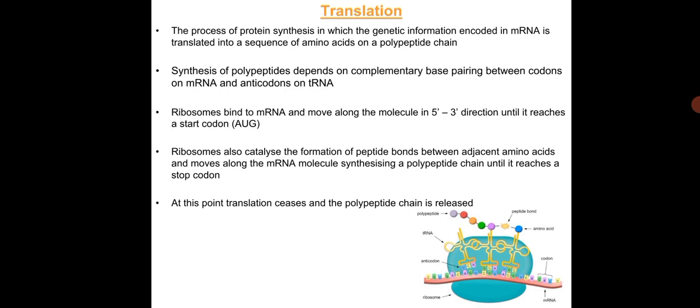Translation is the process of protein synthesis in which the genetic information encoded on mRNA is translated into a sequence of amino acids on a polypeptide chain. The process depends on complementary base pairing between codons on mRNA and anticodons on tRNA. Ribosomes bind to mRNA and move along the molecule in the 5' to 3' direction until reaching a start codon, catalyzing the formation of peptide bonds between adjacent amino acids and synthesizing a polypeptide chain until a stop codon is reached, at which point translation ceases and the polypeptide chain is released.